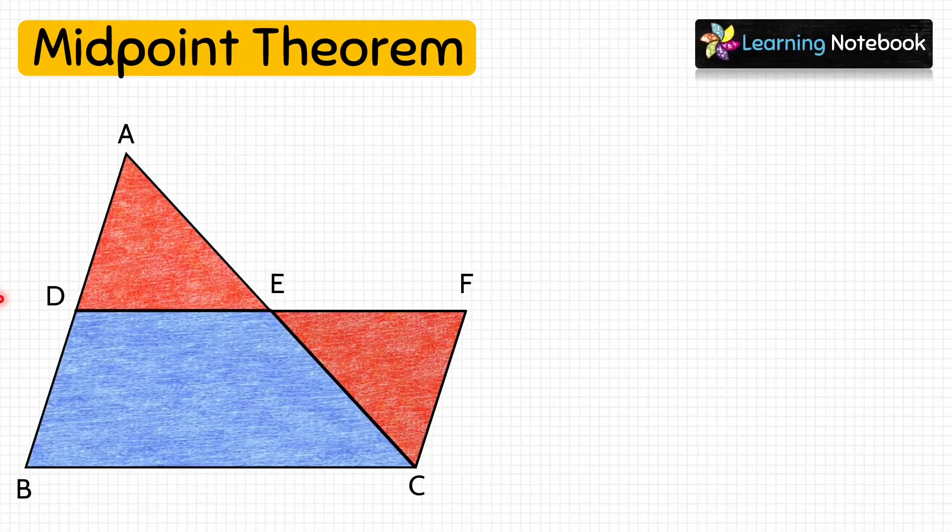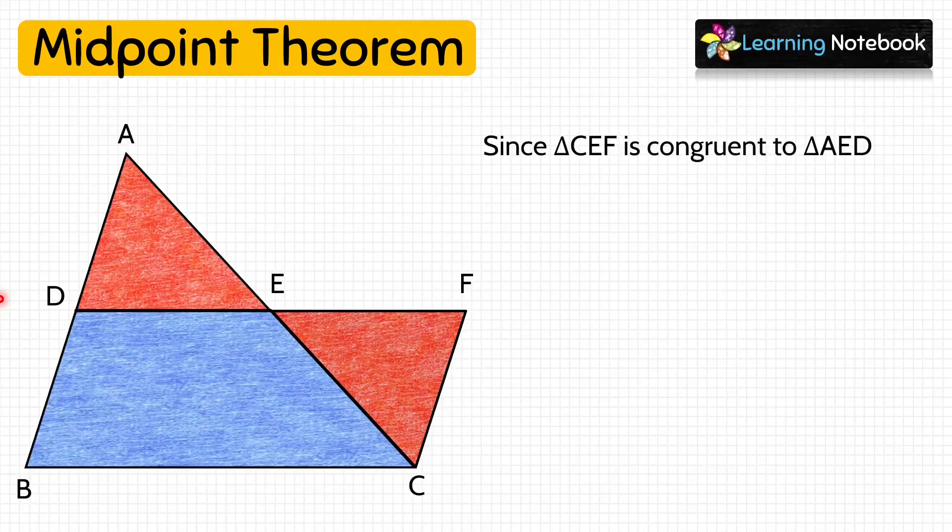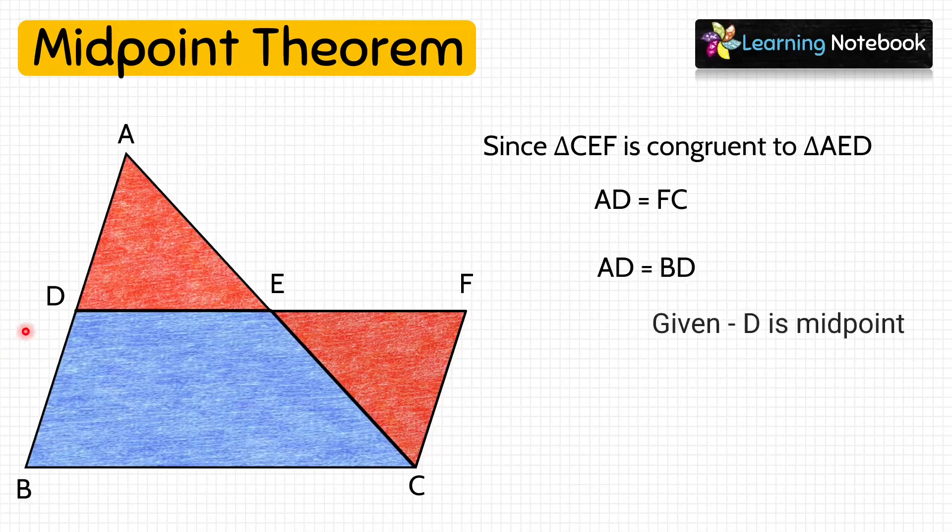Now students, since triangle CEF is congruent to triangle AED, we can say AD equals to FC. Next, D is the midpoint of AB, therefore AD equals to BD.